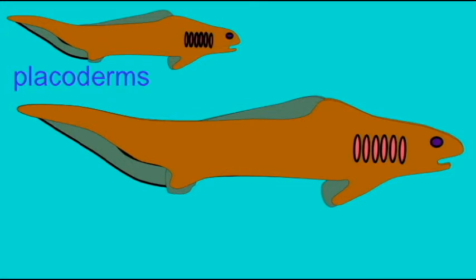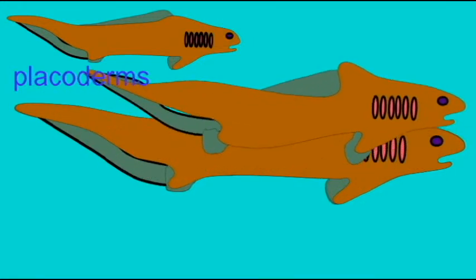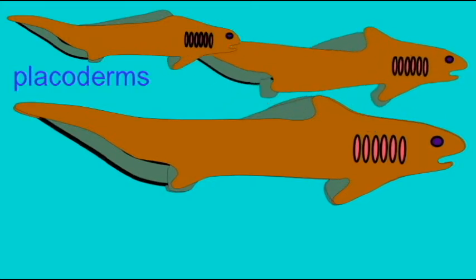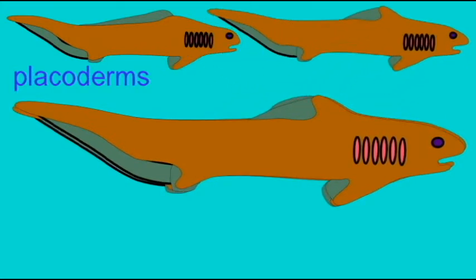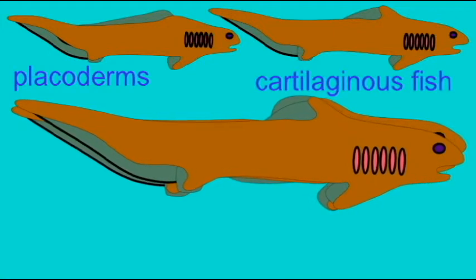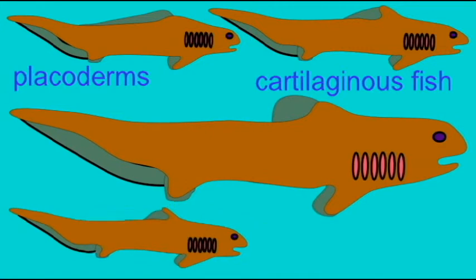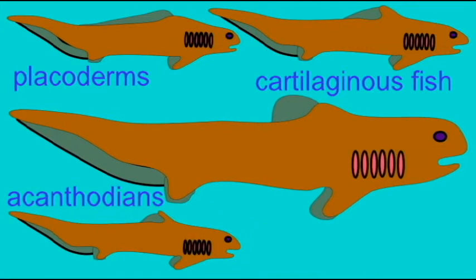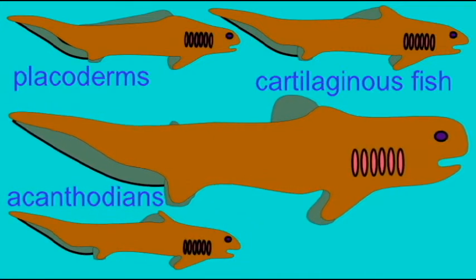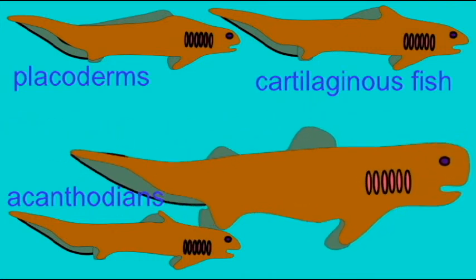There are many similarities between placoderms and sharks, so that cartilaginous fish are thought to be the second most primitive group, followed by the acanthodians which are considered to be transitional between cartilaginous fish and bony fish, and then finally bony fish, the osteichthyans, are considered to be the final group of jawed fish to evolve.